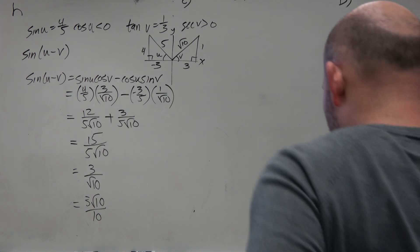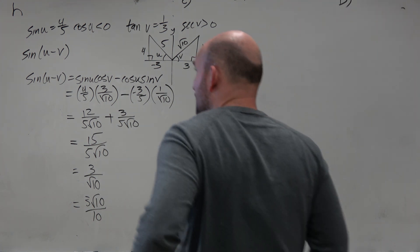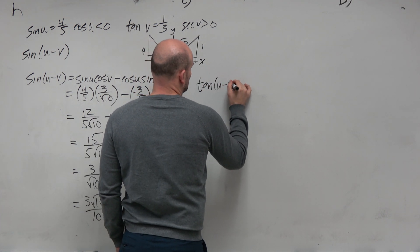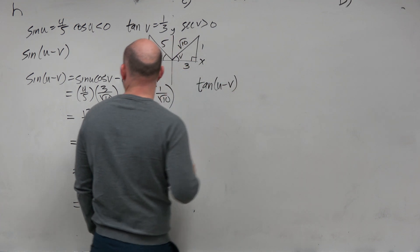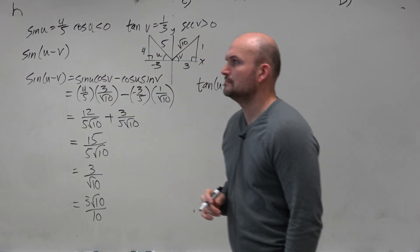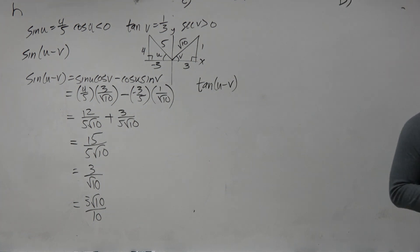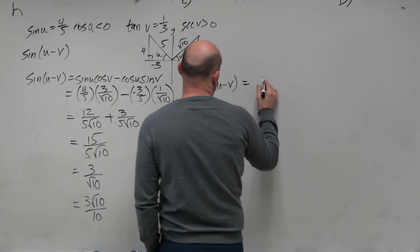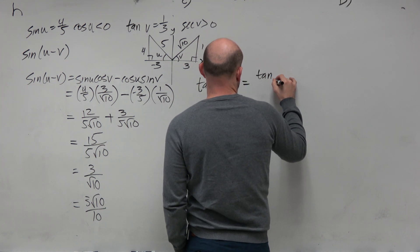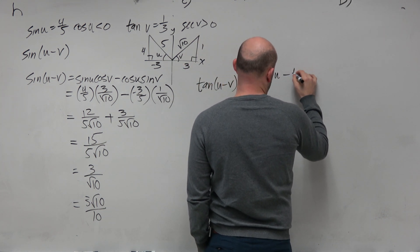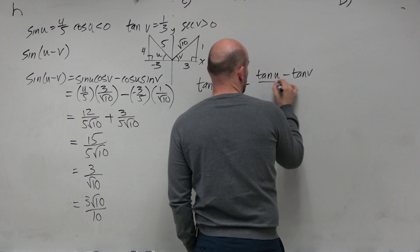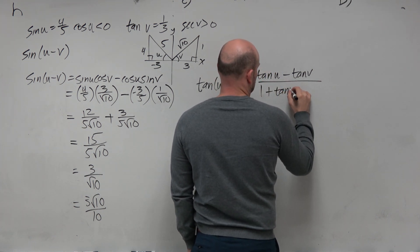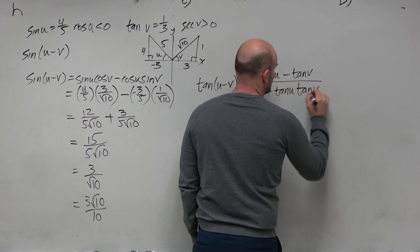So now let's do the same thing, but let's go ahead and do it for tangent. So in this case, I'll have tangent of u minus v. If we're going to subtract in this case, just following the formula: tangent of u minus tangent of v, all over 1 plus tangent of u times tangent of v.